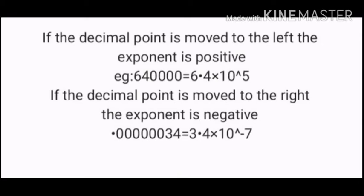For example, 64000 written in scientific notation: we place the decimal point after the first significant digit. Counting the places moved gives an exponent of 5, so the answer is 6.4 × 10^5. Since the decimal moved left, the exponent is positive.